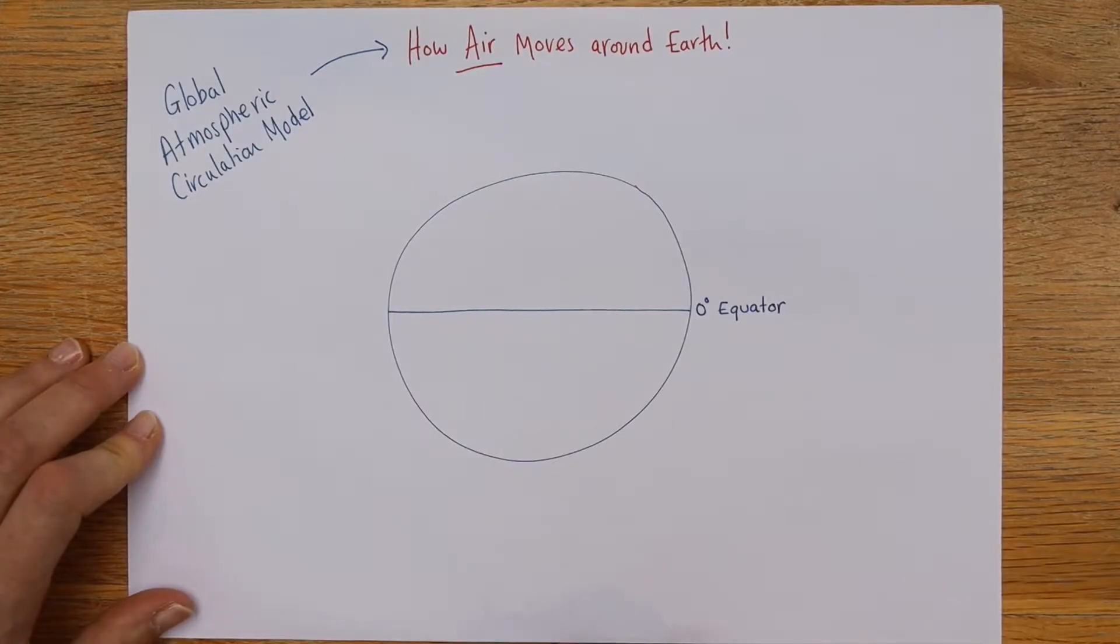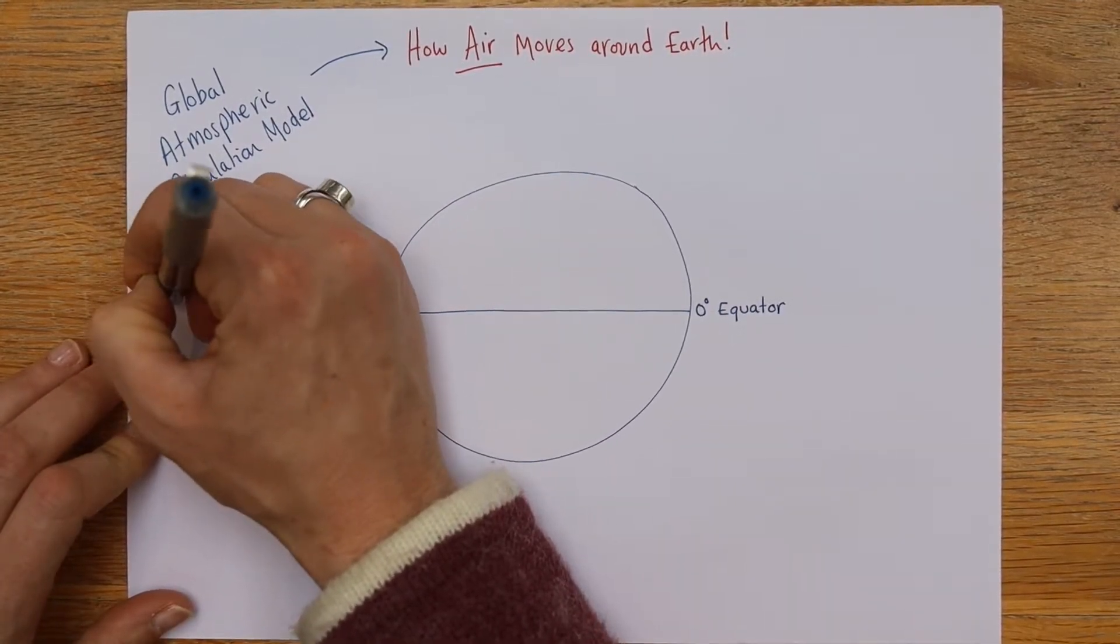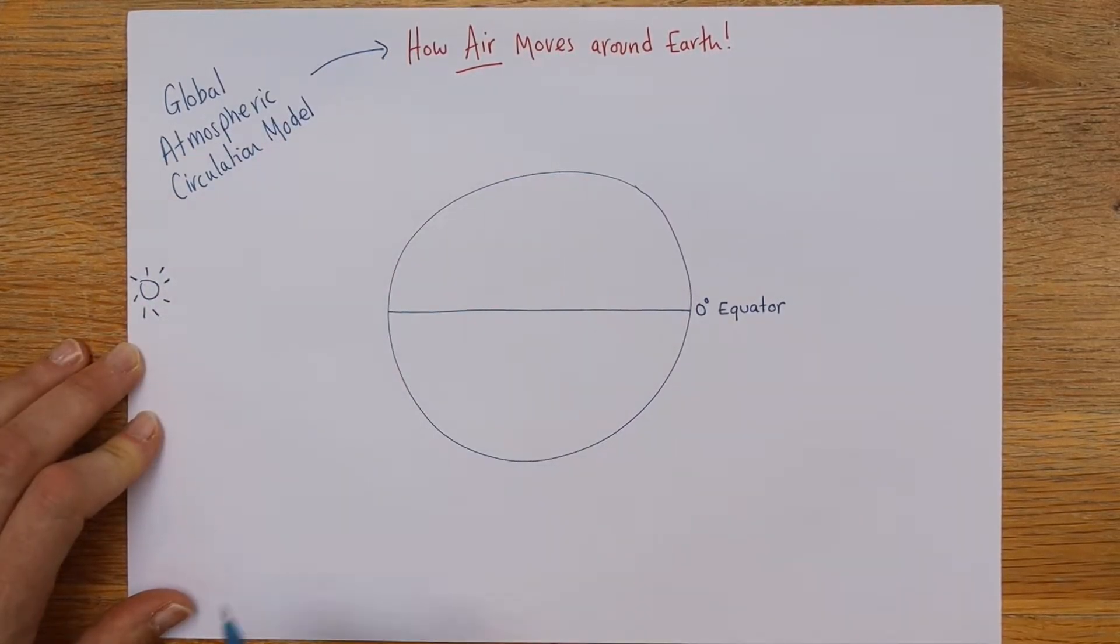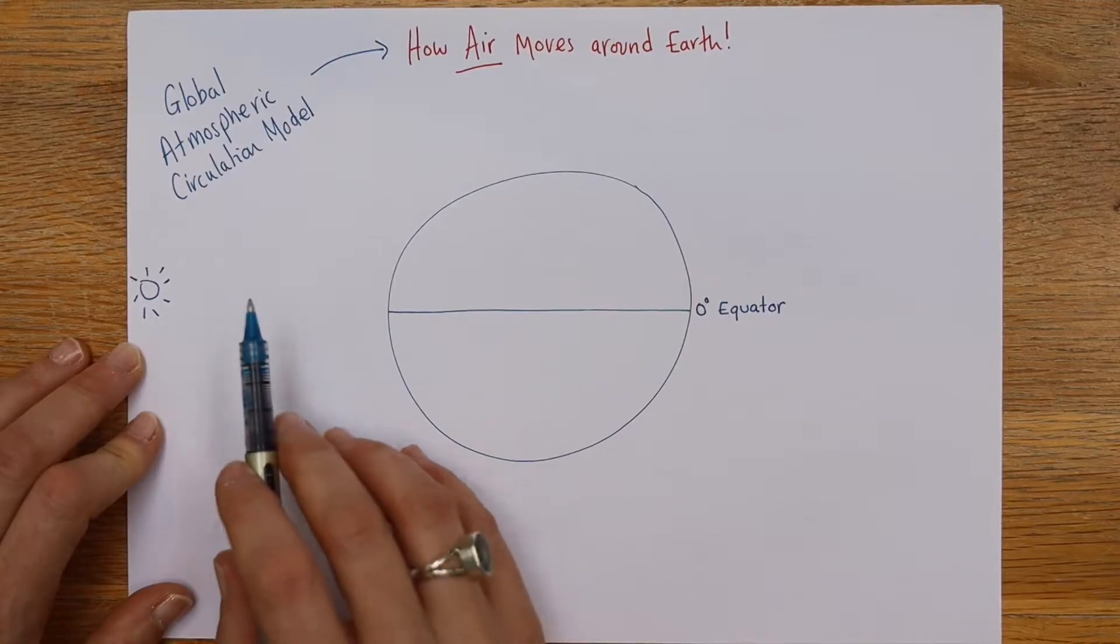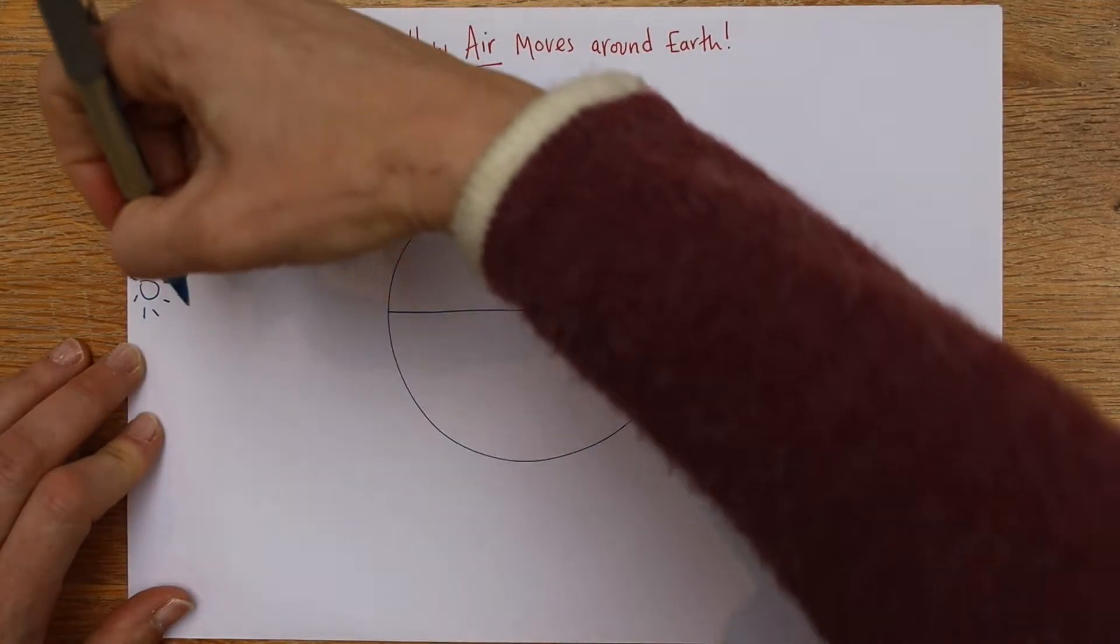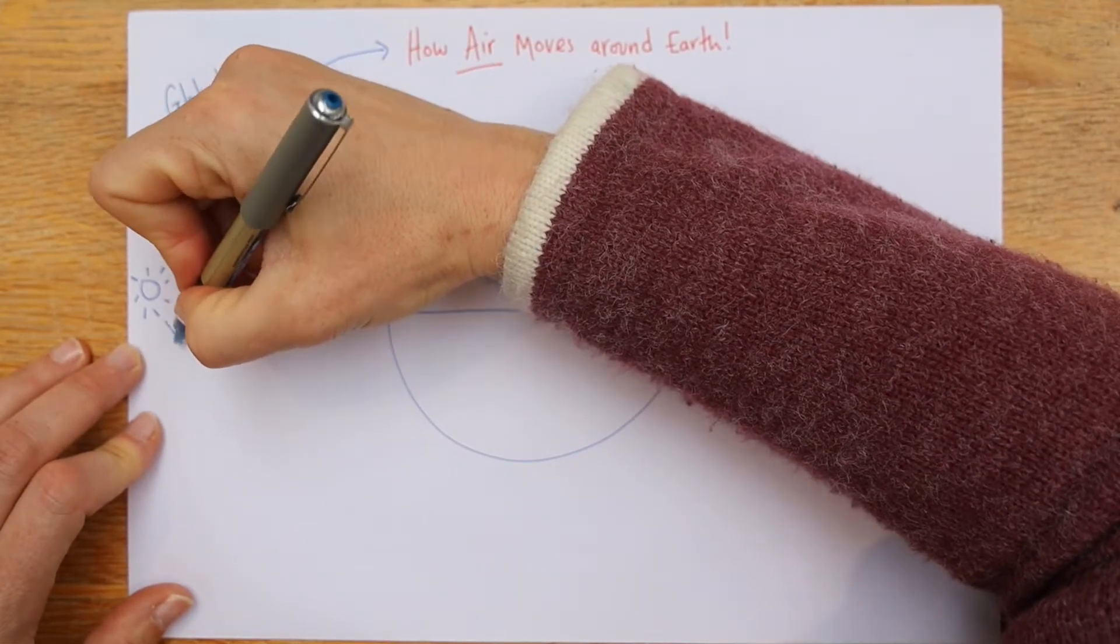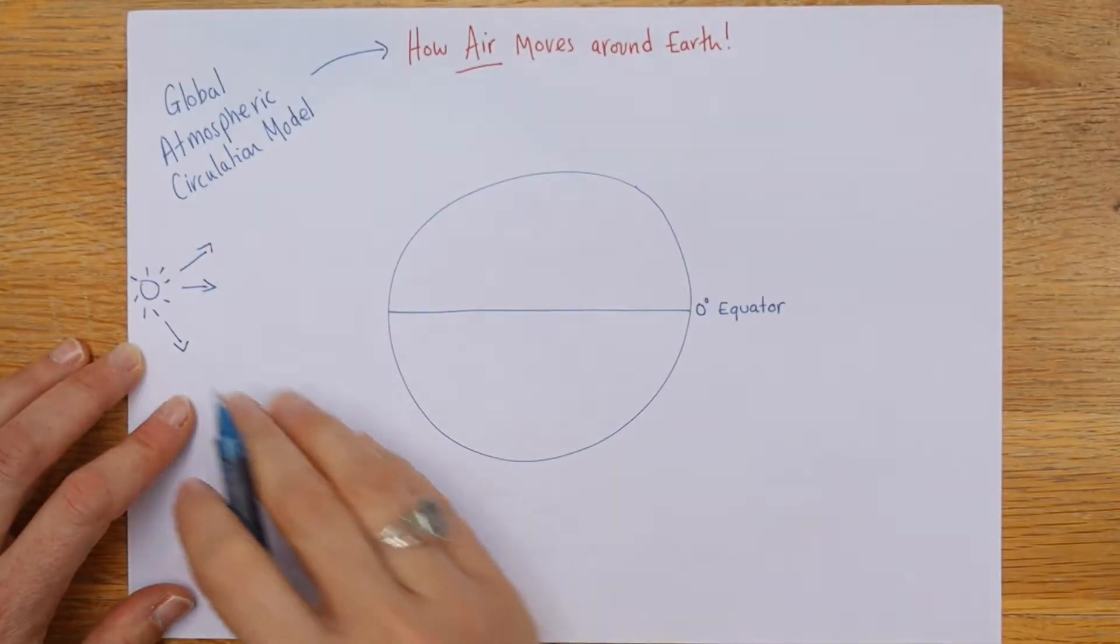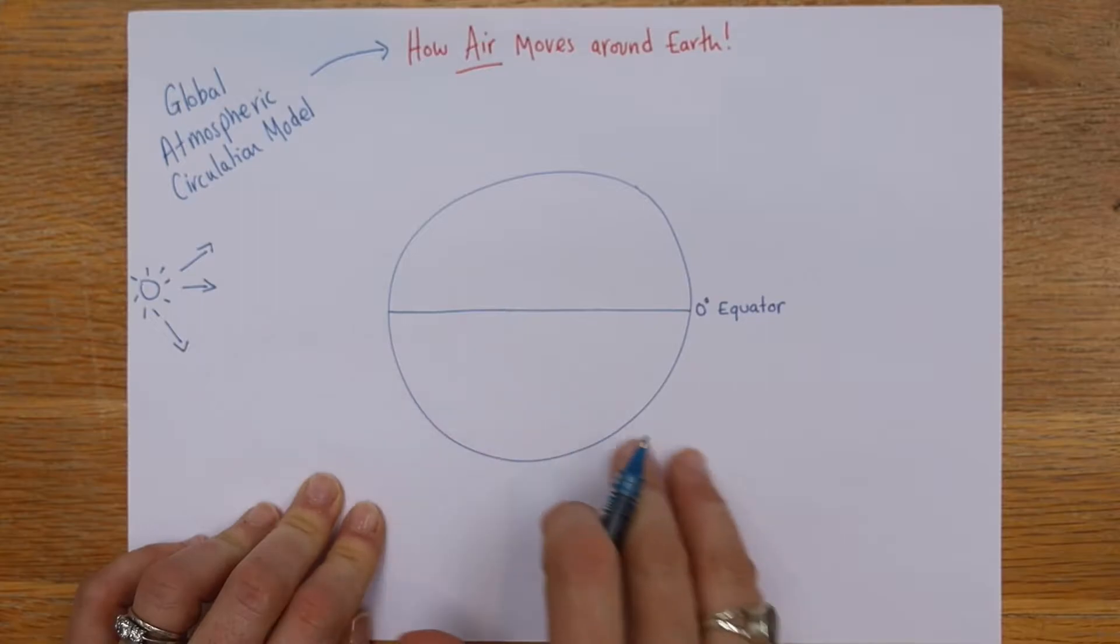And then over here, we're going to just draw the Sun. I know the Sun looks super tiny compared to the Earth. Don't worry about that. It's just a figurative thing. It's just to help you remember that the Sun is coming towards the Earth like this. Lots of ultraviolet radiation. It does have an impact, so we do need to remember it there.